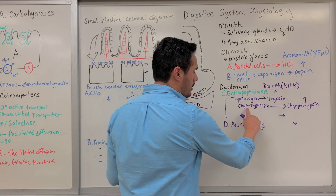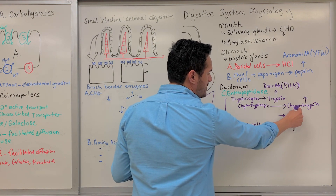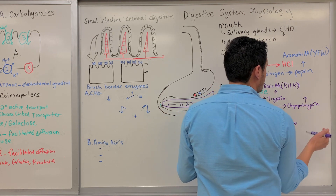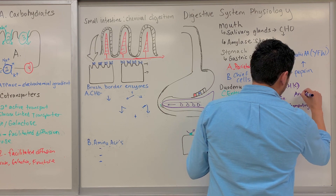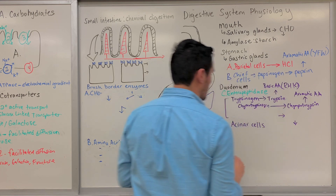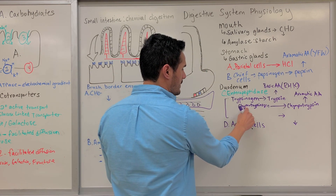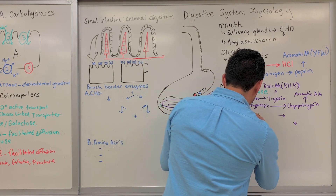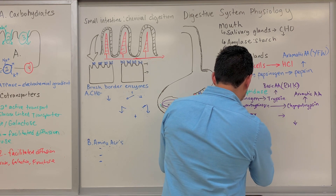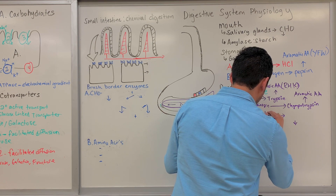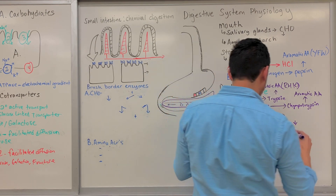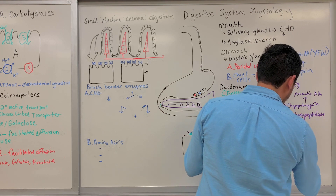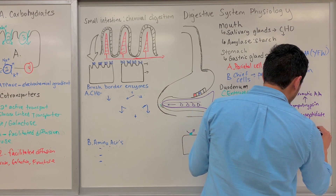Chymotrypsinogen is converted to chymotrypsin via trypsin, and what chymotrypsin targets is also aromatic amino acids. The last enzyme here is pro-carboxypeptidase. Pro-carboxypeptidase gets cleaved into carboxypeptidase, and the target here is the C-terminal of a peptide.